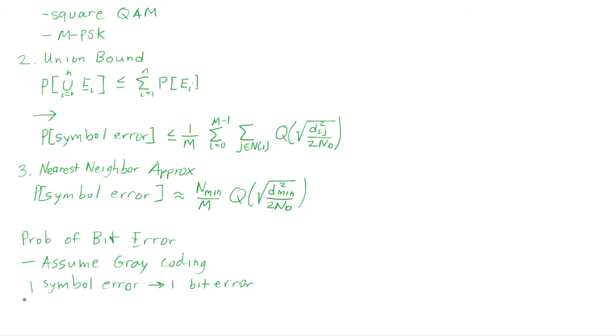And with this approximation, I can write the probability of bit error as approximately one over log base 2 of m. This log base 2 of m is the number of bits per symbol multiplied by the probability of symbol error.